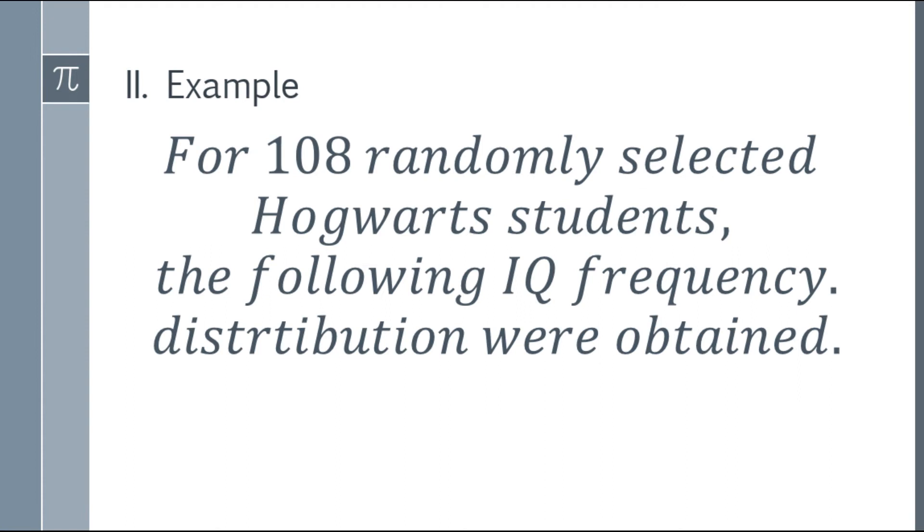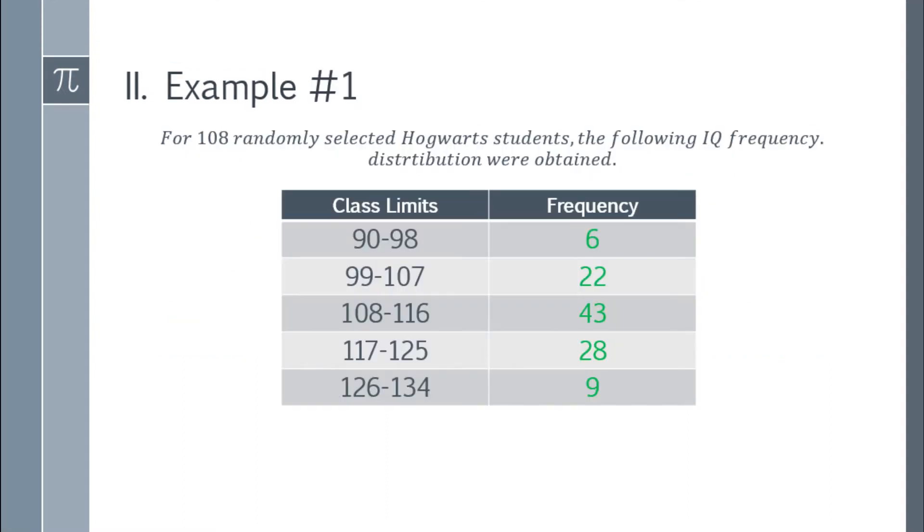For 108 randomly selected Hogwarts students, the following IQ frequency distribution was obtained. Here's the table with our given data. First, we have the class limits and the frequency. In the class limits, we have 90 to 98, 99 to 107, and so on. For frequency, this shows the count of students who achieved each score range: 6, 22, 43, 28, and 9. The frequency is color-coded in green.